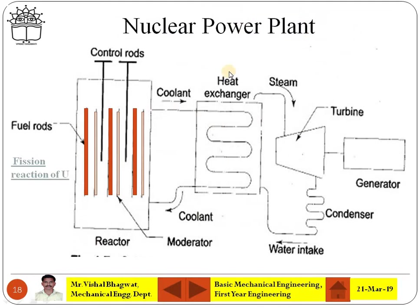This is a schematic representation of a nuclear power plant where you have the nuclear reactor core and then there is a heat exchanger. There will be some kind of coolant which carries heat from the nuclear reactor to the heat exchanger, and inside the heat exchanger the water will be heated and converted into superheated steam. The steam is collected and blown over the turbine.